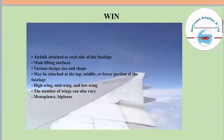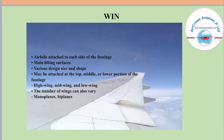Moving to the wing — airfoils are attached to each side of the fuselage, and wings are generally known as the main lifting surfaces. There are various wing designs of various sizes and shapes. A wing may be attached at the top, middle, or lower portion of the fuselage. If the wing is at the top, the aircraft is a high-wing aircraft; if at the mid-section, it is a mid-wing aircraft; and if at the lower portion, it is a low-wing aircraft.